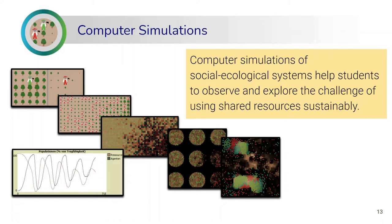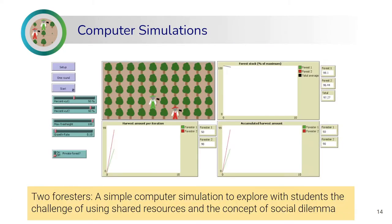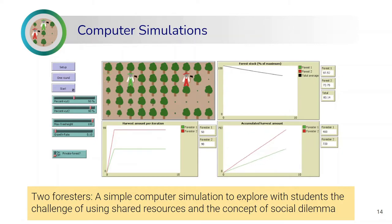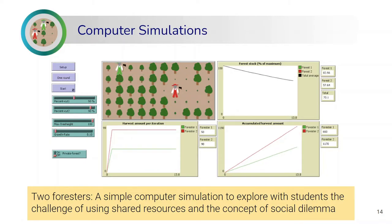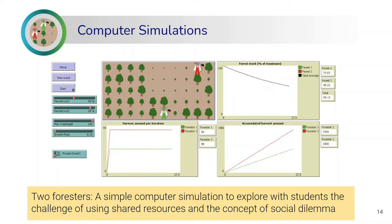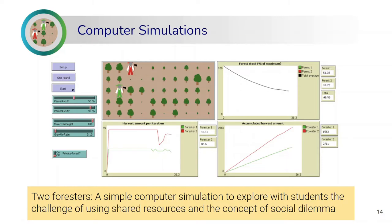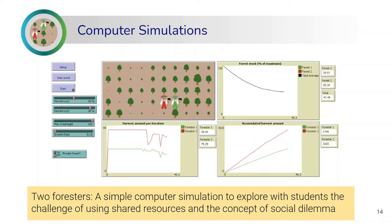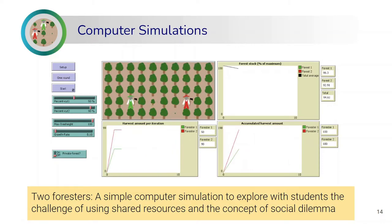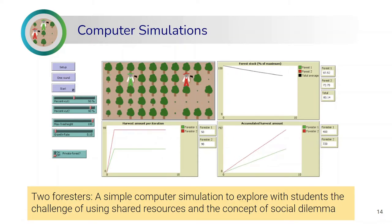Another way to explore cooperation and social dilemmas with students is the use of computer simulations — specifically so-called agent-based models. These are models that simulate the behavior of many small agents or creatures in a world, and we can observe how their combined behaviors lead to certain outcomes over time. A simple example is an agent-based model of two foresters harvesting a common forest, which can help students understand why it's challenging to use shared resources and then reflect on how we might overcome this dilemma in the real world. Further simulations can add complexity such as evolutionary processes and social behaviors that change how the system evolves over time.